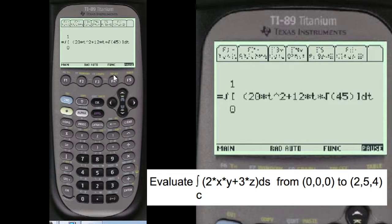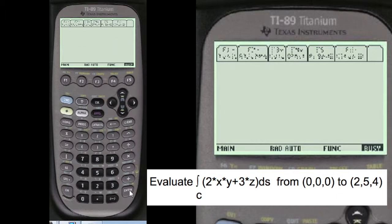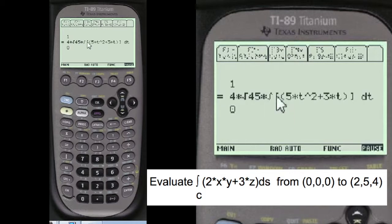And we start putting it together here. Here's the original function, F, XT, YT, ZT, and then the magnitude is square root of 45.